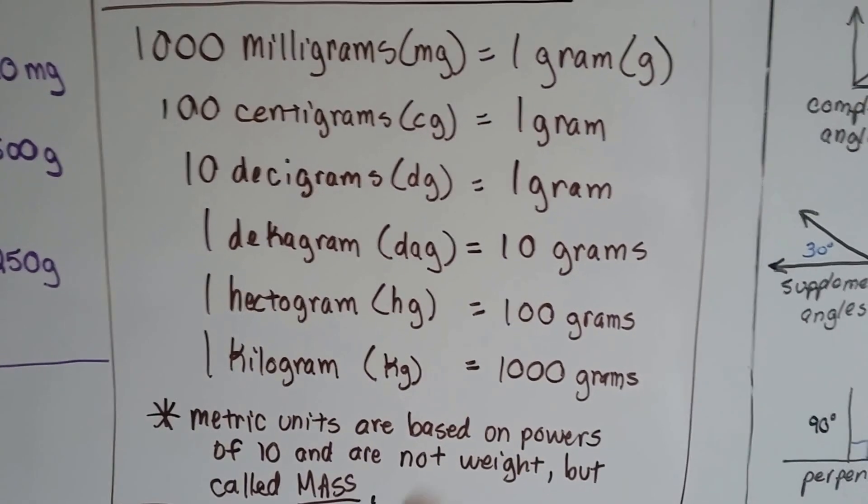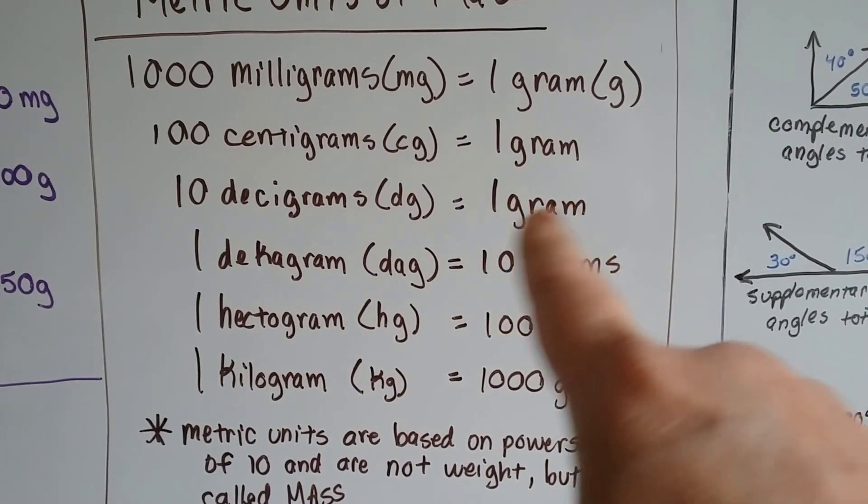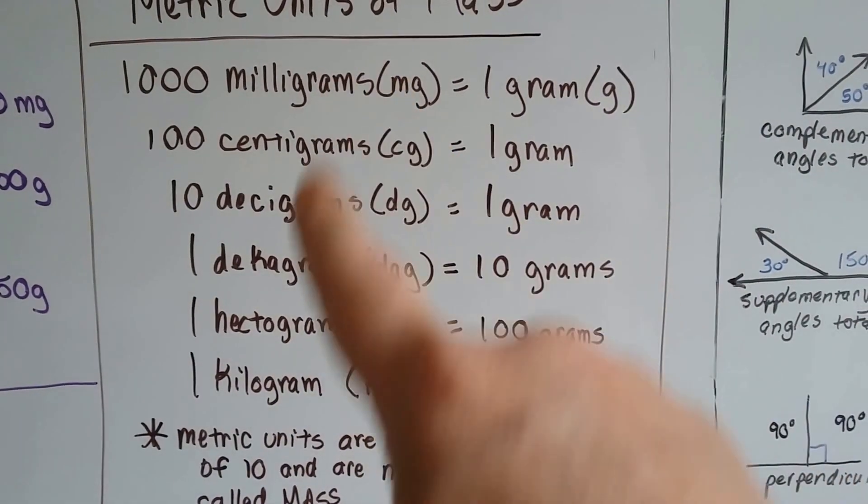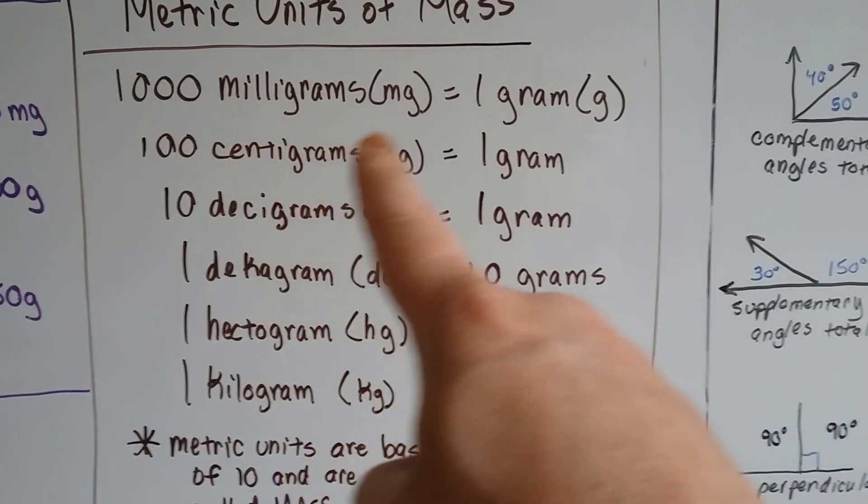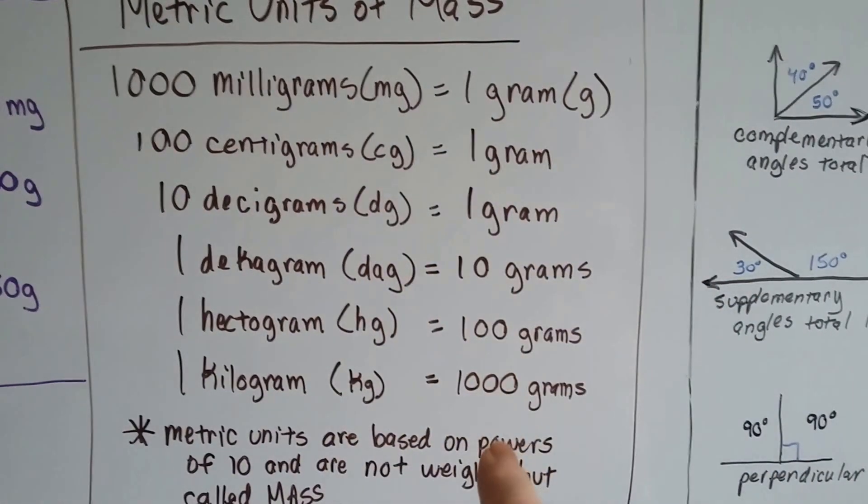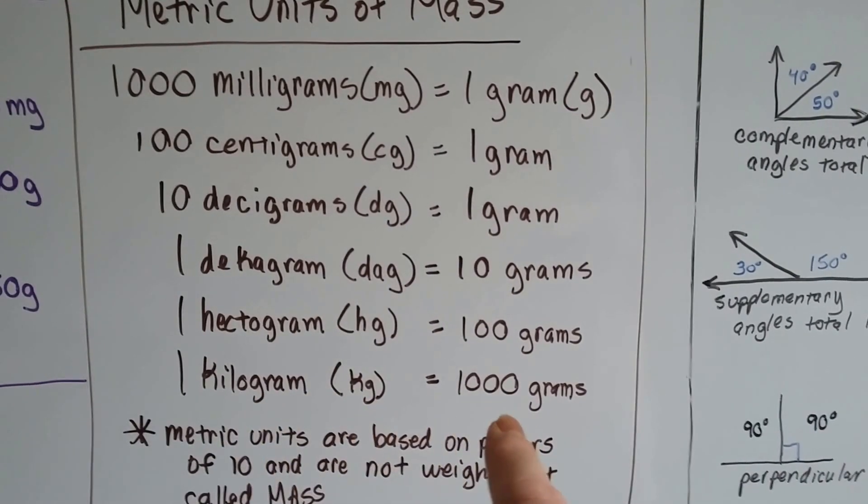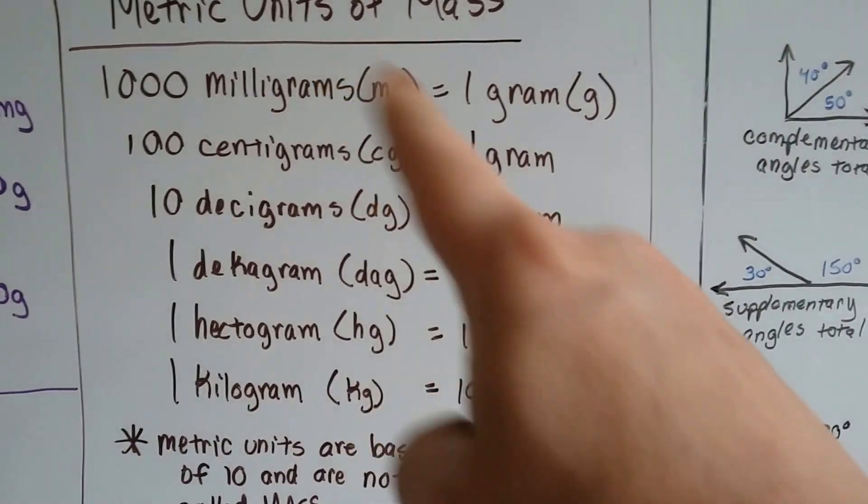So you can see how everything is based on grams. That's the center point, and they all have the name gram in them. 1,000 milligrams is very tiny because one gram is 1,000 milligrams. But one kilogram is very large because that's 1,000 grams, compared to the milligrams.